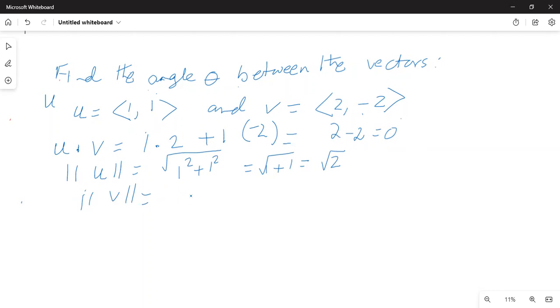And magnitude of vector v is equal to square root of 2 square plus minus 2 square is equal to 2 square is 4 and minus 2 times minus 2 is also positive 4, which is equal to square root of 8. So cosine of theta,